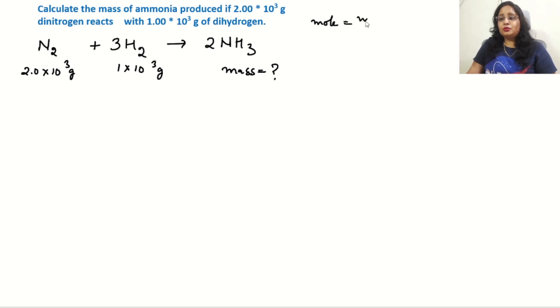The formula is mole equals mass divided by molar mass. Molar mass is the atomic mass expressed in grams. For nitrogen N₂, nitrogen is 14, so N₂ is 14 × 2 = 28 grams per mole.